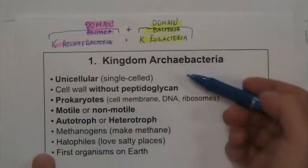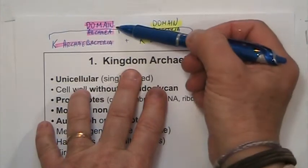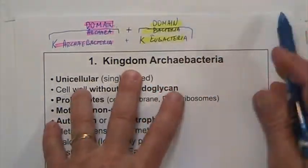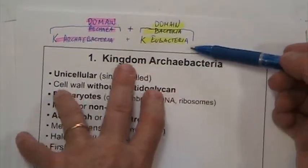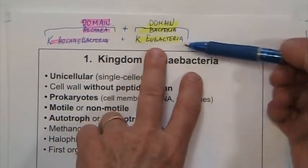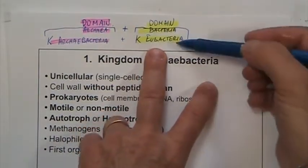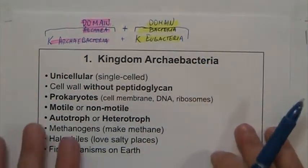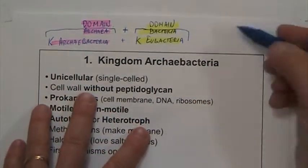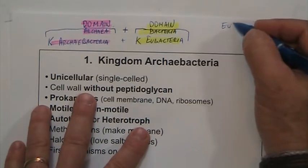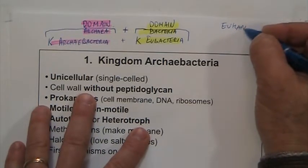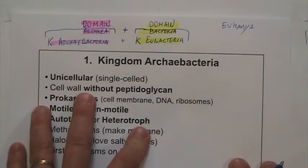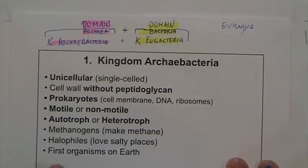The Archaeobacteria belong to the domain Archaea and is the only kingdom there. The kingdom Eubacteria belongs to its own domain, the domain Bacteria. The other domain we have is the domain Eukarya, which includes all organisms with eukaryotic cells.